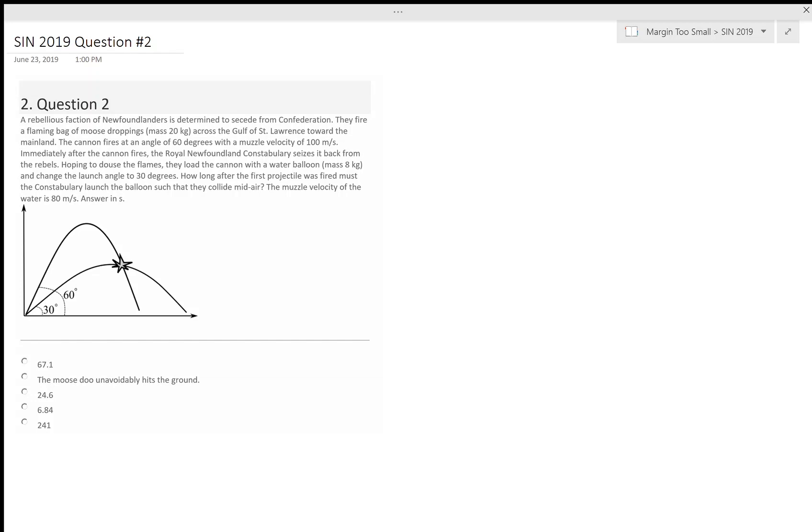For question two of the 2019 Sir Isaac Newton physics contest, we have a humorous take on a kinematics problem. Moose droppings are thrown at an angle of 60 degrees at a speed of 100 meters per second, and we want to find how many seconds to wait before shooting a water balloon at an angle of 30 degrees at 80 meters per second such that the two objects collide in mid-air.